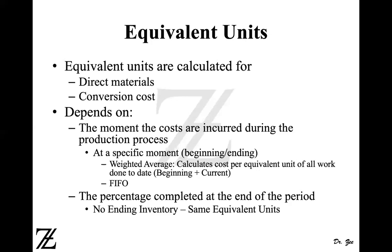In FIFO, on the other hand, the current period cost plus beginning cost are not combined. In FIFO, if you incurred cost in the prior period, you discard that — only the cost incurred in the current period is considered. So for partially completed units that are 75% done in the prior period, you only add the costs of the remaining 25% that you work on in the current period.